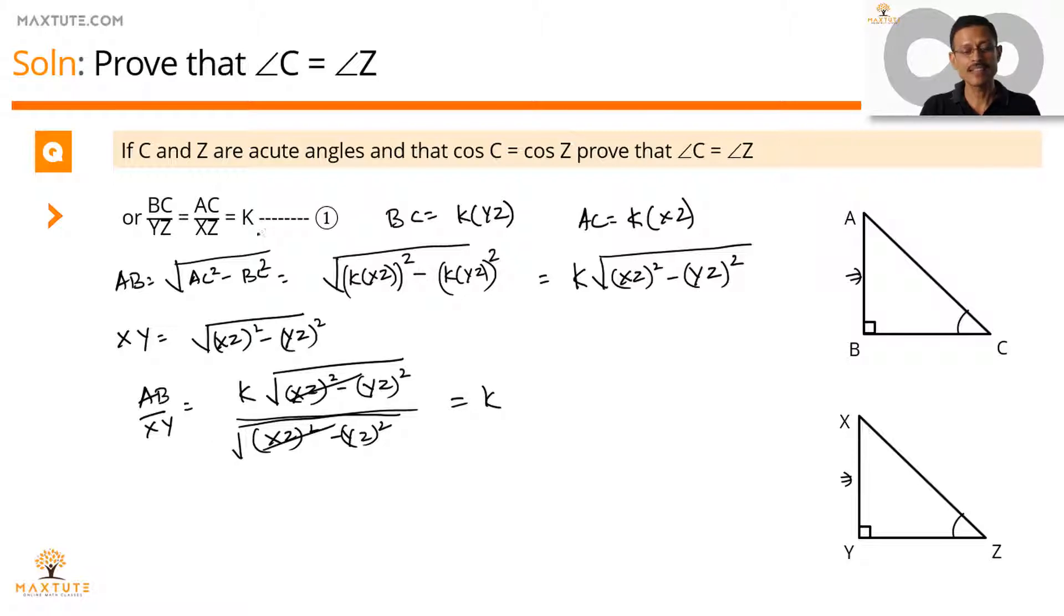We started with the premise that K is equal to BC by YZ, K is equal to AC by XZ. Now we have K is equal to AB by XY. So let's write all of them together right now. So BC by YZ is equal to AC by XZ is equal to AB by XY. This is equal to K.